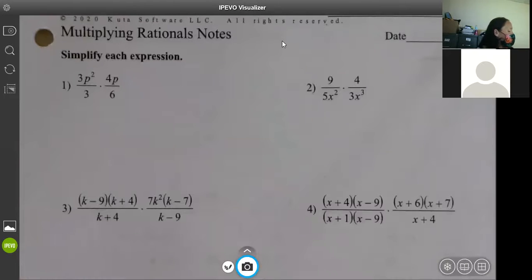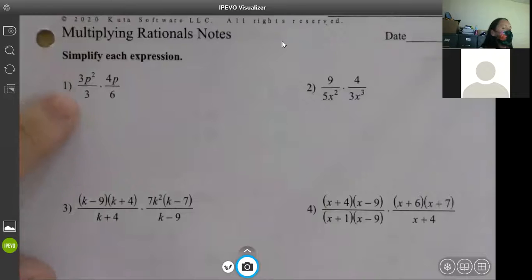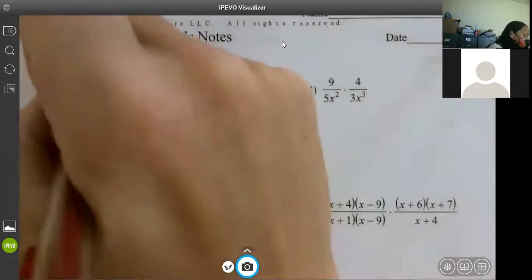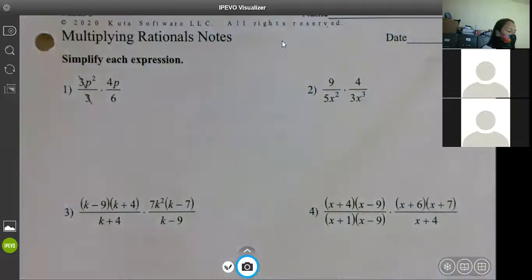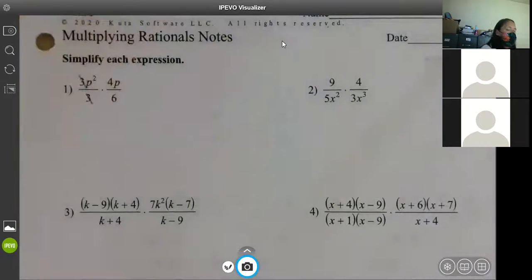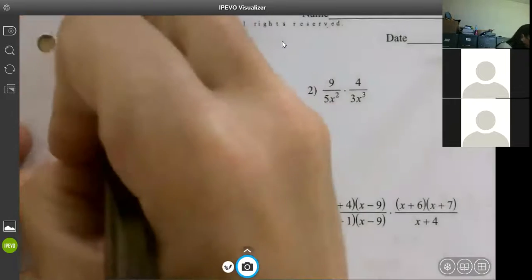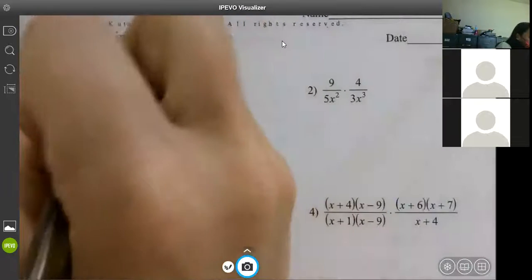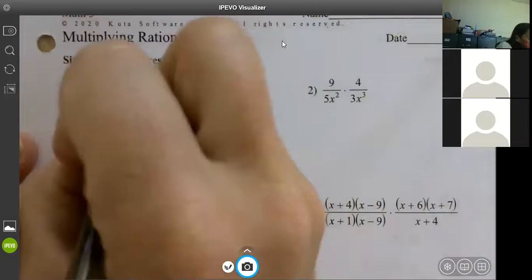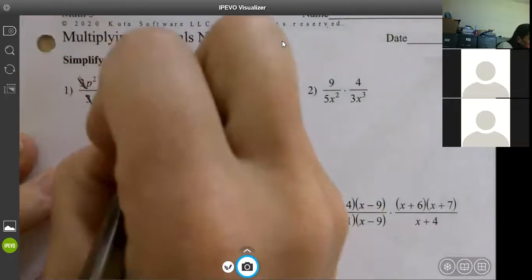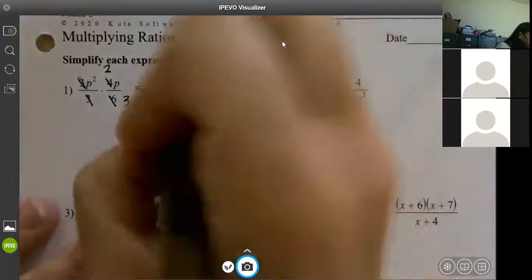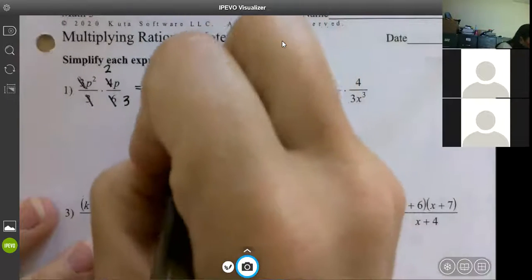So here's what you want to look at. Look at each individual fraction first. Look at this very first one. Is there anything I can do to this first one to simplify? I can mark out the three. Perfect. So then look at the second one. Is there anything I can do to it? Four and six reduce to two and three.